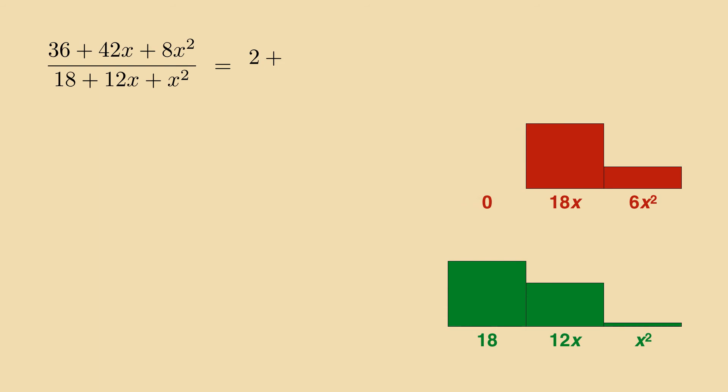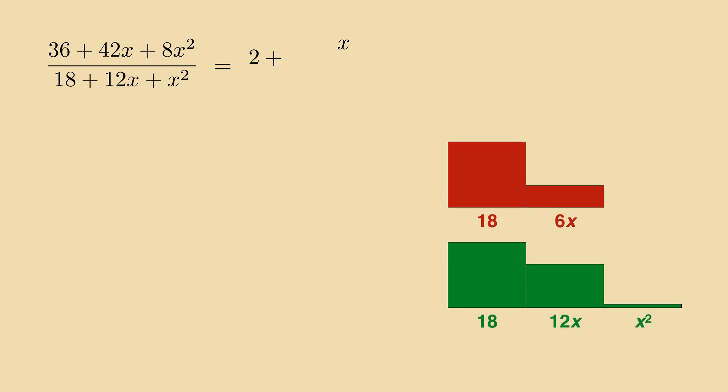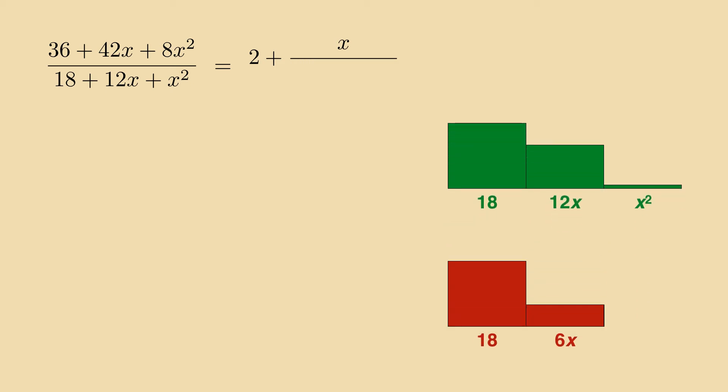What's left is 18x plus 6x squared. Right now we can't fit neither polynomial into the other, but we can factor out x. Then we compare 18 plus 6x with 18 plus 12x plus x squared. Now we can fit the red into the green, but bear in mind that the roles are now reversed. In other words, we decompose the inverse fraction 18 plus 12x plus x squared over 18 plus 6x. So we draw a fraction bar under the x and now the method repeats.